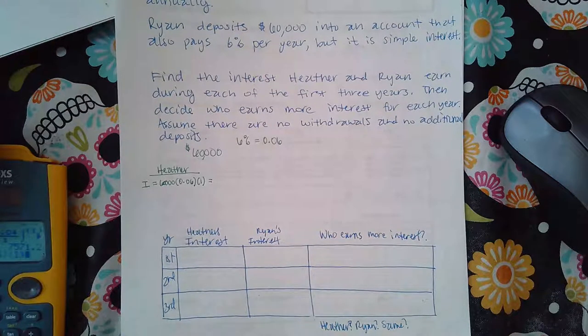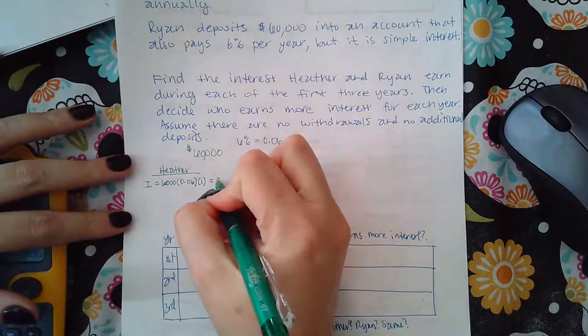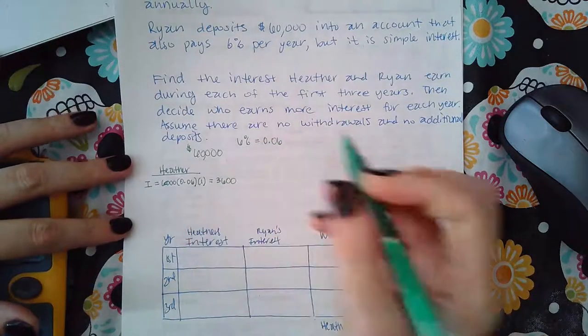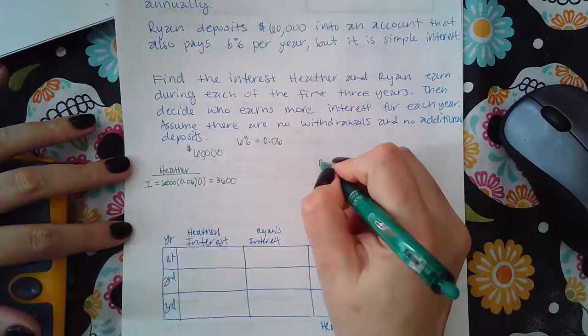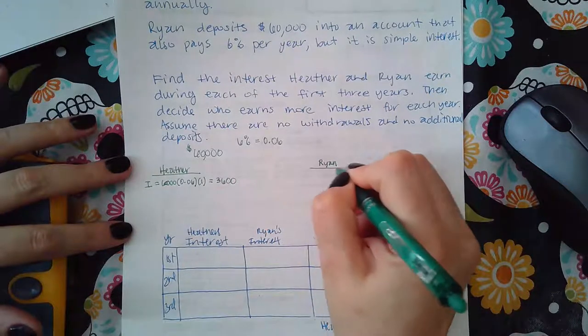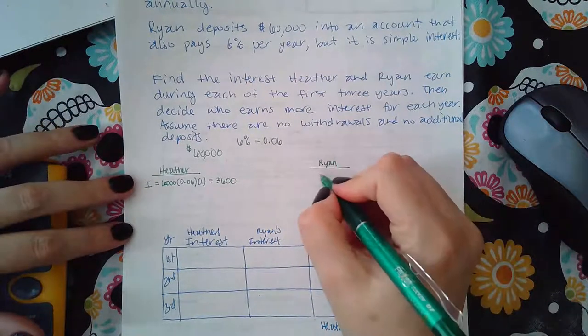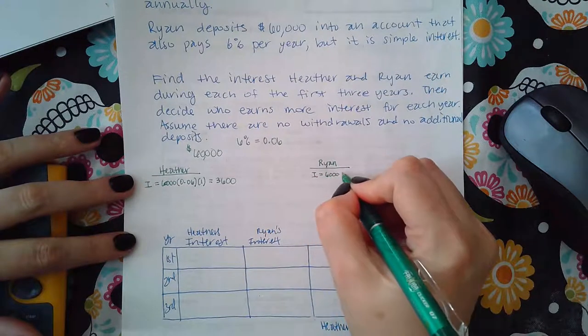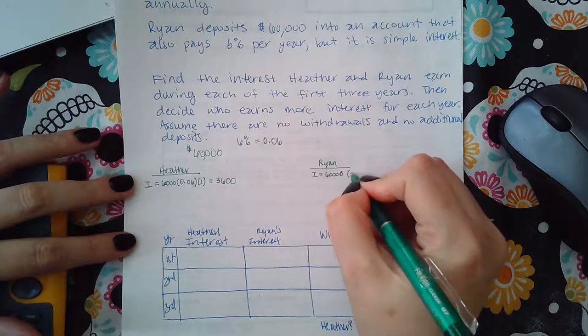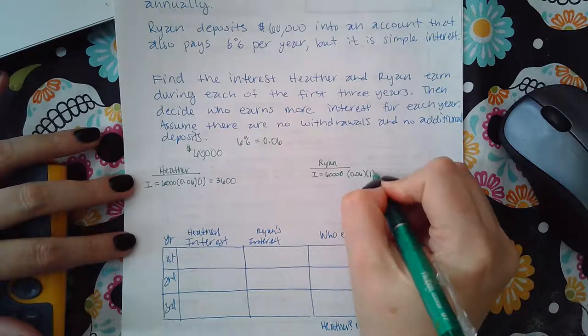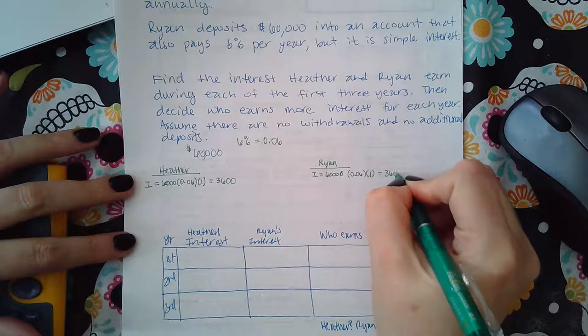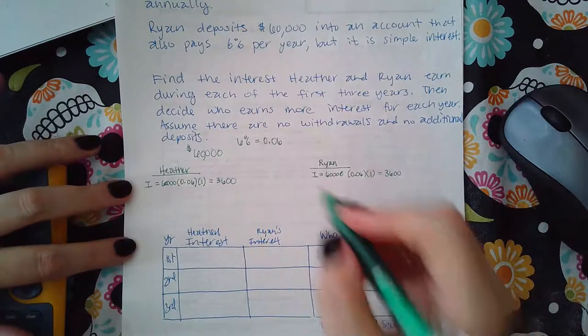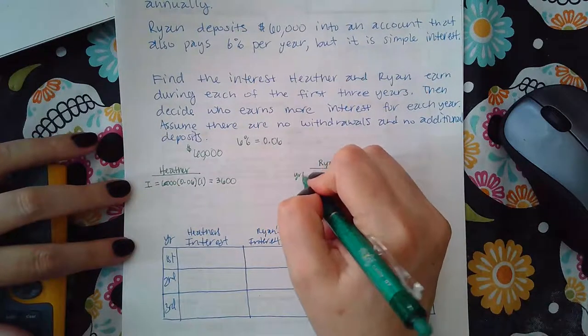Now for Ryan, his interest equals $60,000 times 0.06 times one, which is $3,600. Now this is for year one, this is for year one.